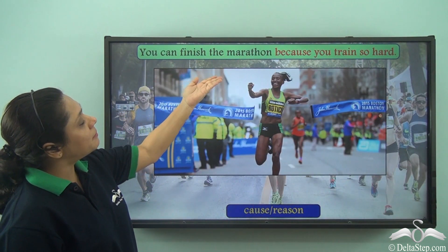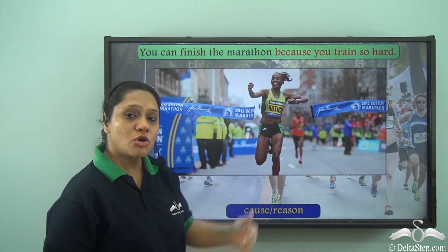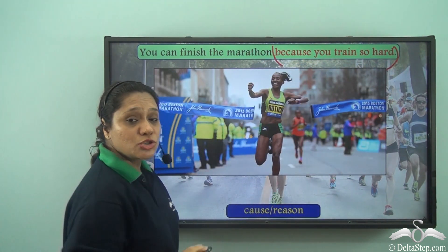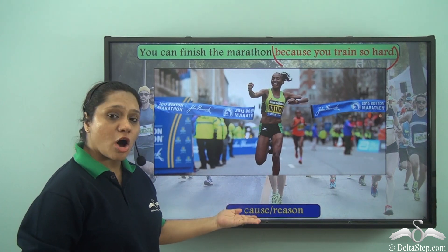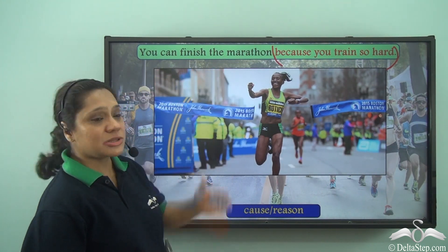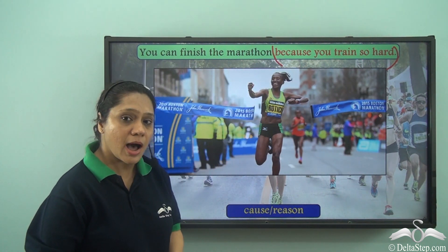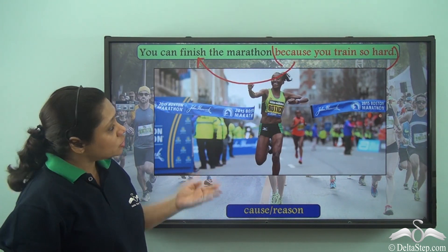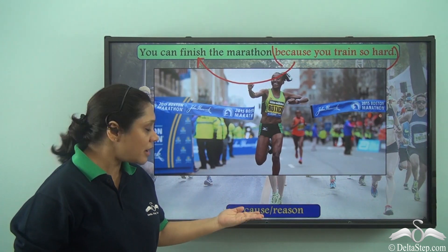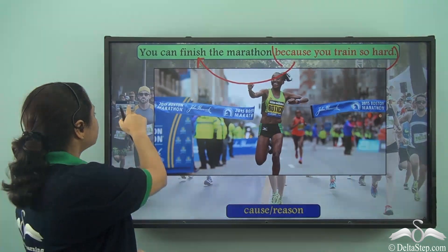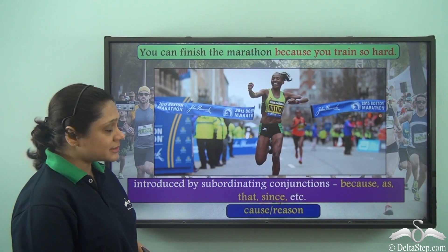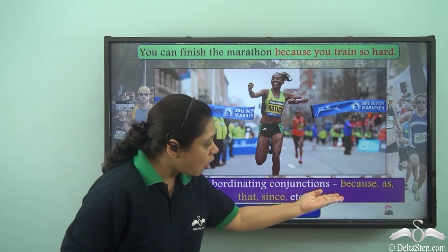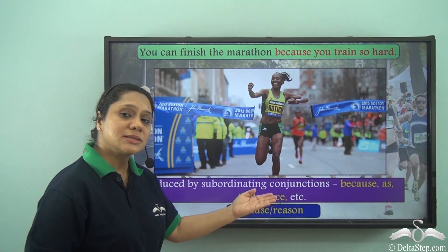'You can finish the marathon because you train so hard.' Here, 'because you train so hard' does the work of an adverb of cause or reason — it describes the verb 'finish' by answering why you can finish the marathon. So 'because you train so hard' is an adverb clause of cause or reason. Such clauses are usually introduced by subordinating conjunctions like because, as, that, since, etc.